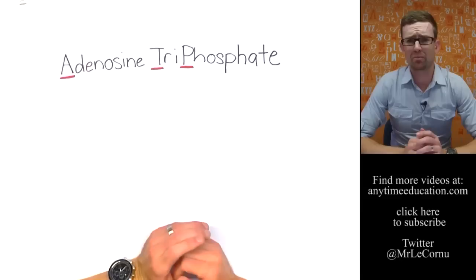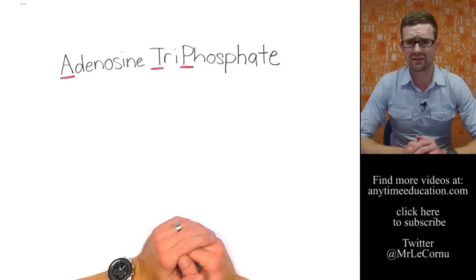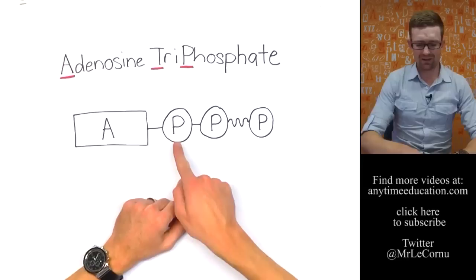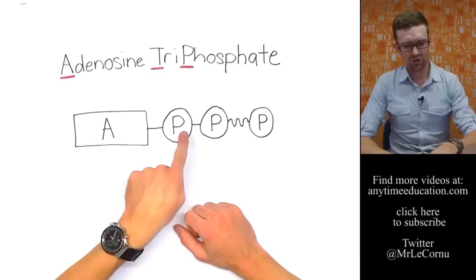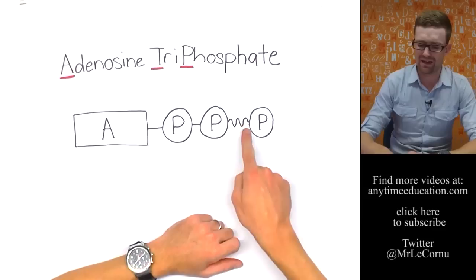And it's a really important short term energy storage compound in cells. It's made up of adenosine and three phosphate groups. That's where it gets its name, adenosine tri, meaning three, phosphates.